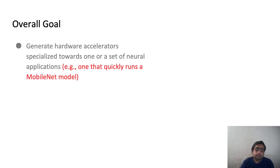Okay, so our overall goal in this work is to produce optimized hardware accelerators that are specialized towards running a given set of neural network applications. For example, we might want to produce an accelerator that can quickly run a MobileNet model. Specialization of accelerators towards particular applications has already shown benefits, and our goal in this work is to devise a method that can automatically do accelerator design.